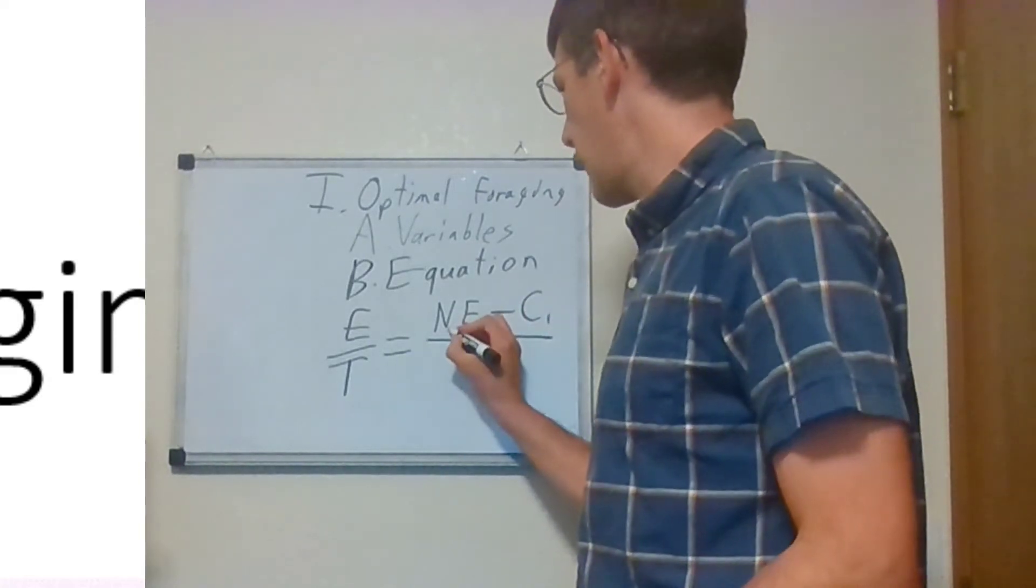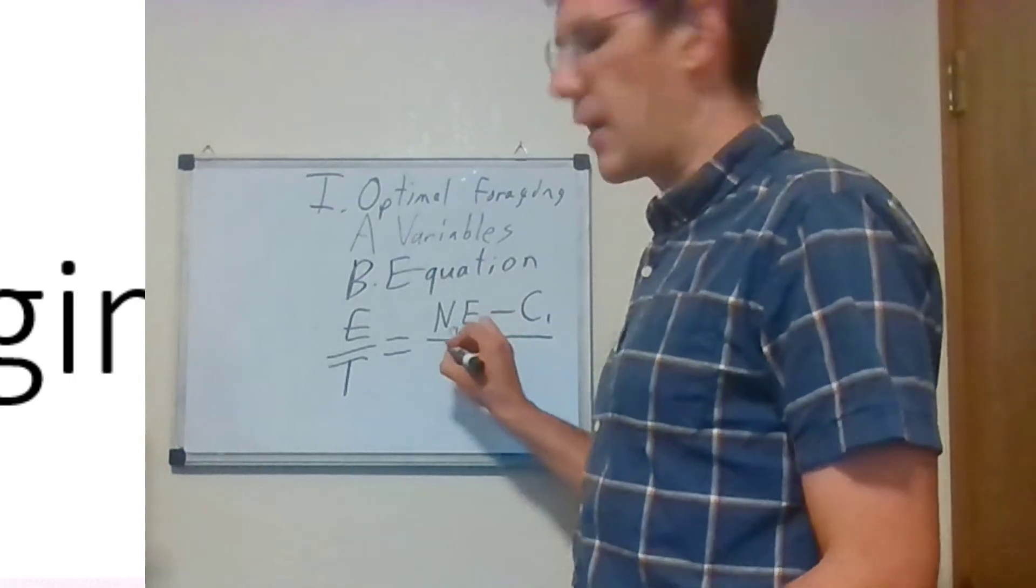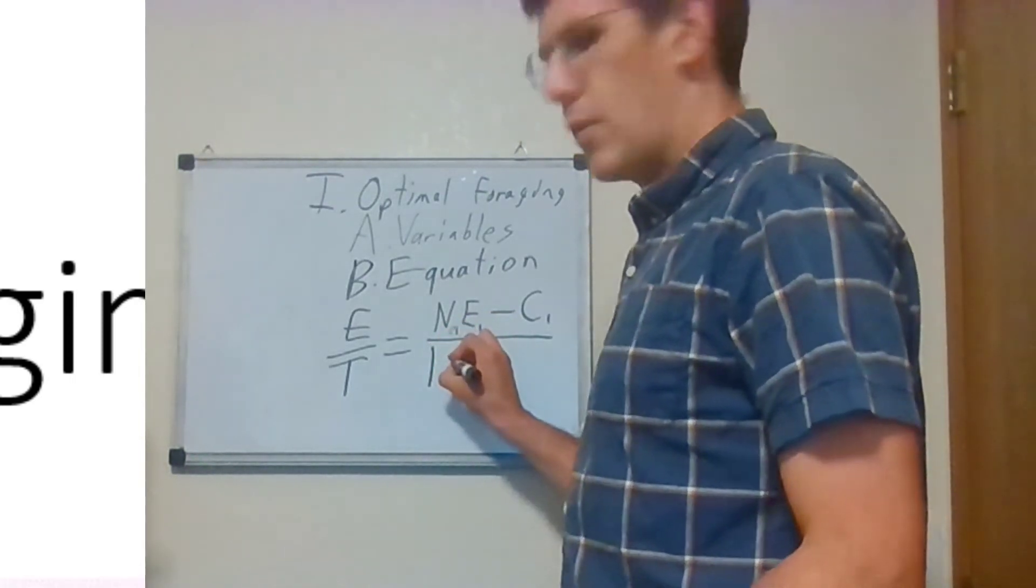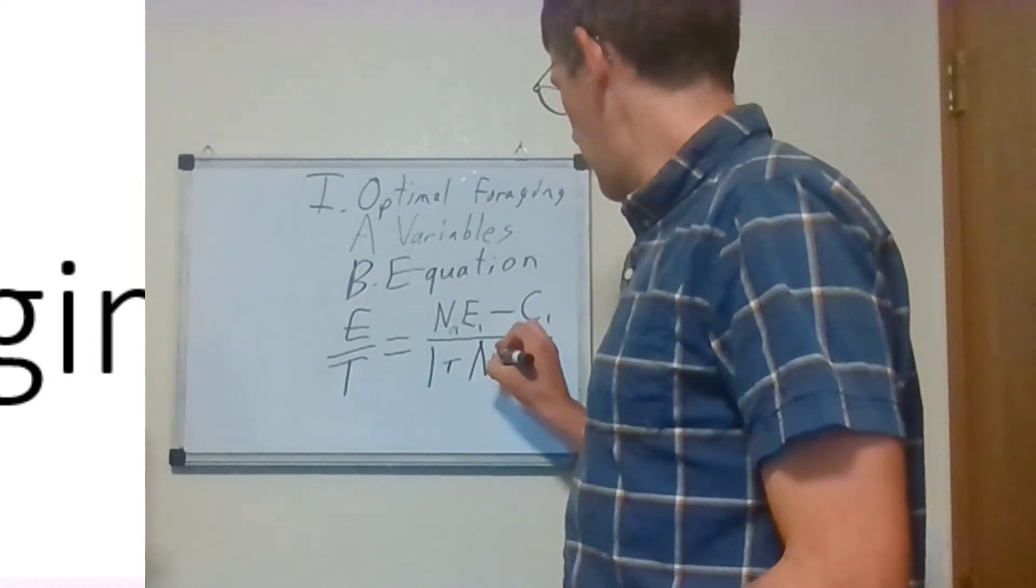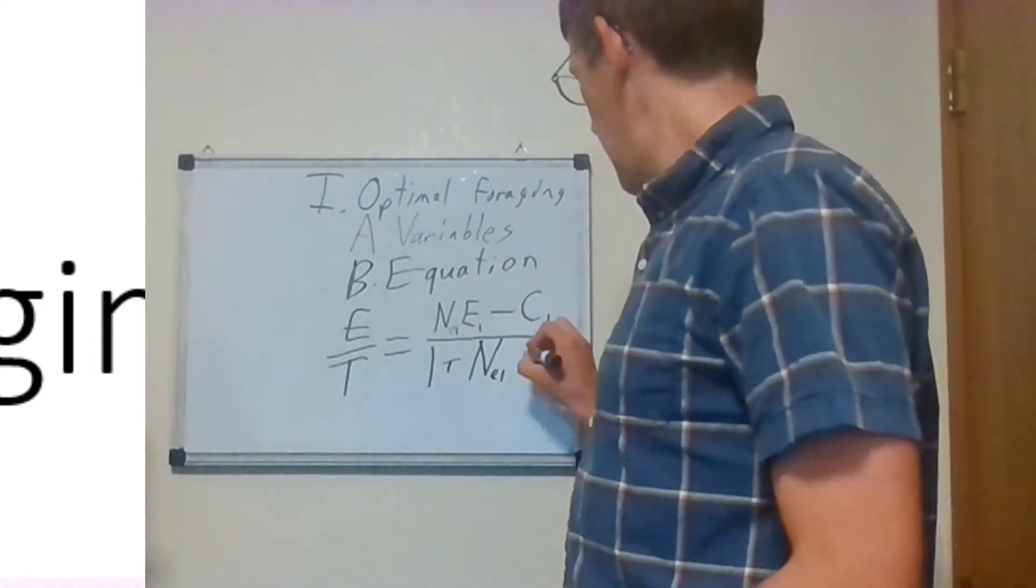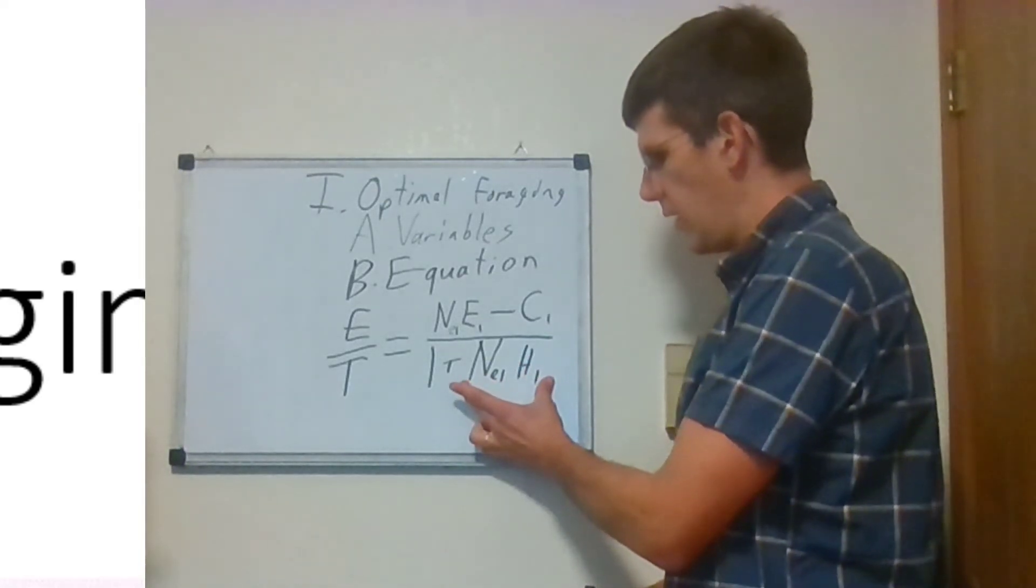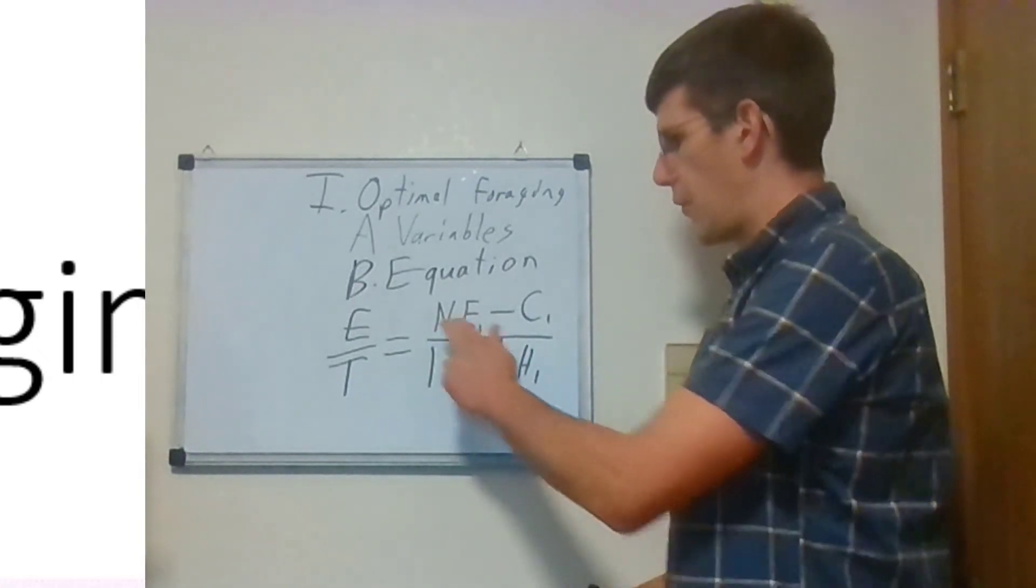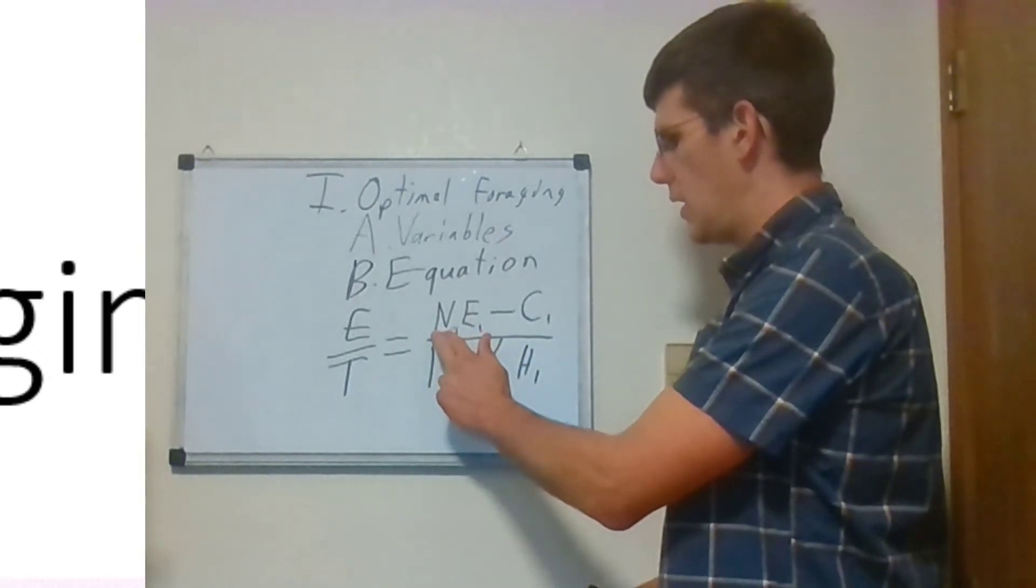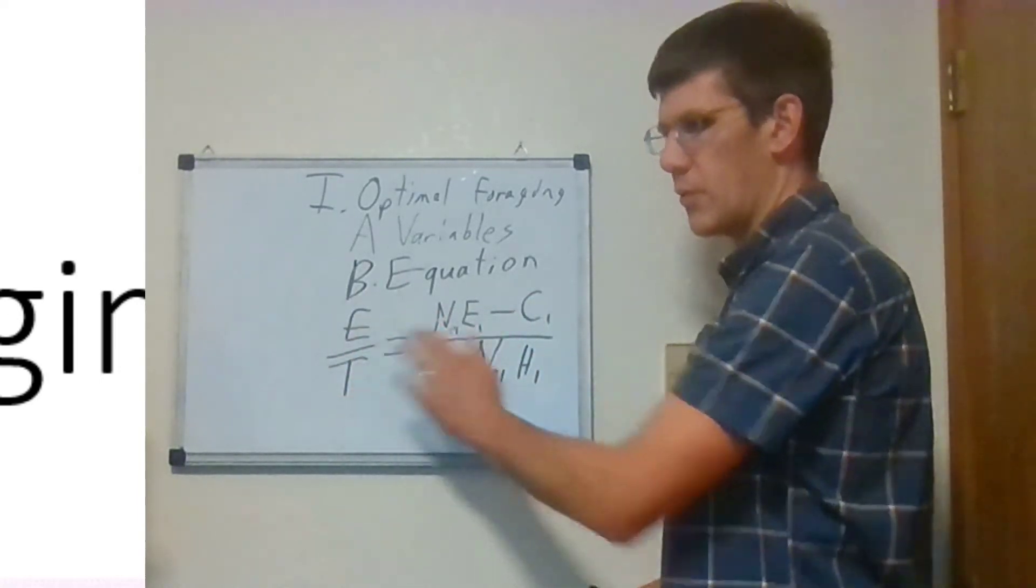It's the energy per unit minus the cost of energy, and then over one plus E1H1. So we see here, the larger the handling cost per unit prey, the smaller amount of energy can be received per time. But the larger the prey population and less cost searching for it, the larger the energy per unit time.